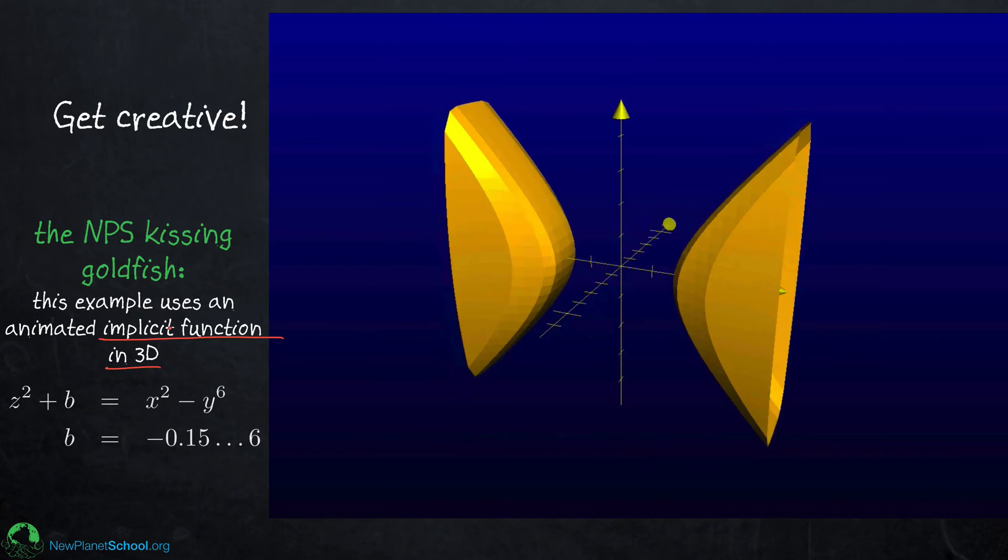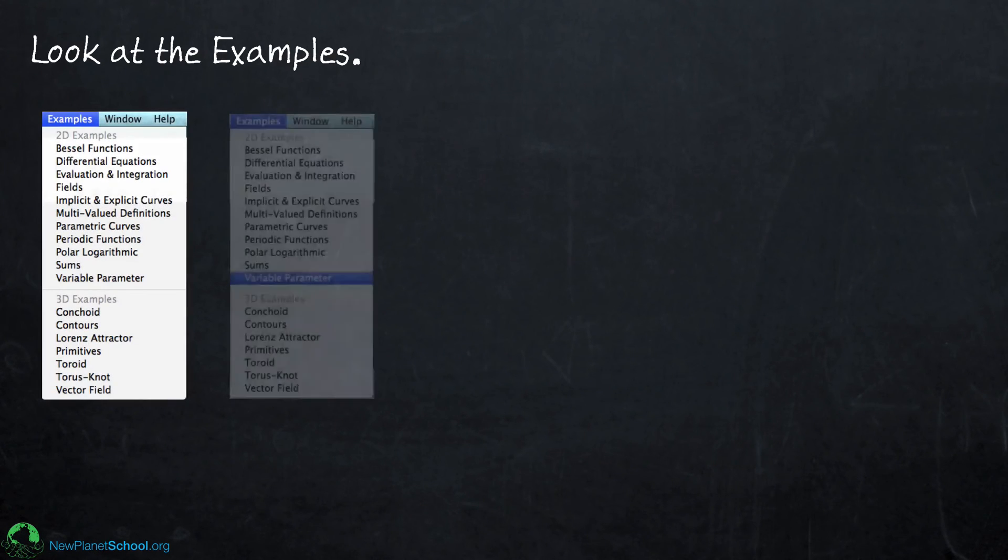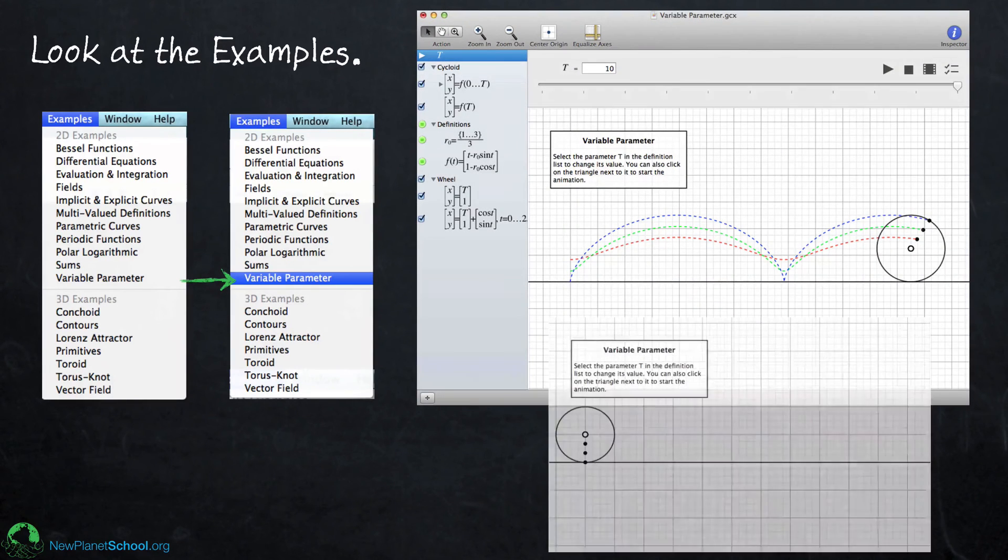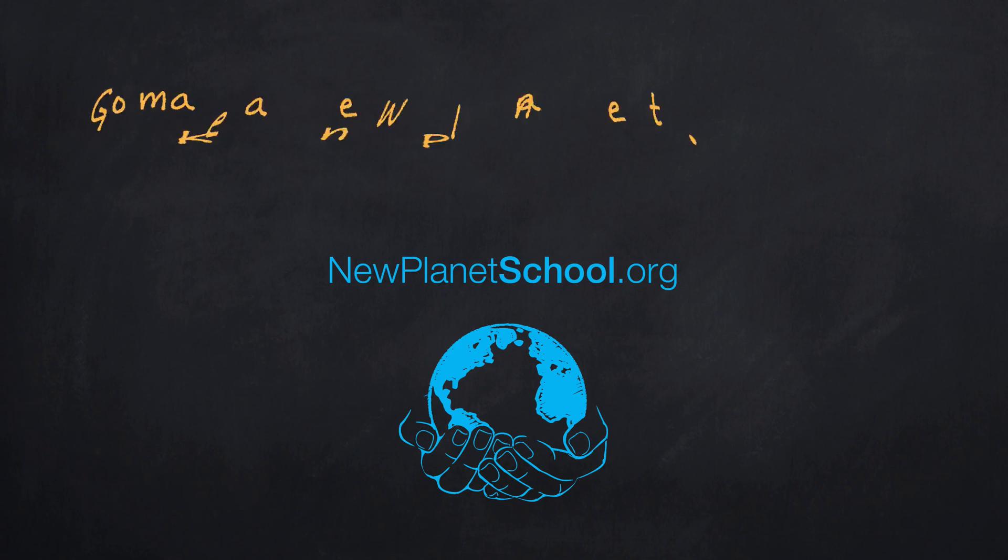If you go up into the examples menu, there's something called variable parameter. And it's the example that is for animations. And so you can go in and play around with that and see what other things you can do with this great capability in MacGrapher. And so with that, thanks for being here. We'll see you back here at New Planet School very soon.